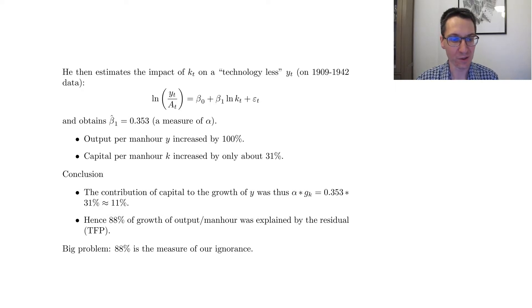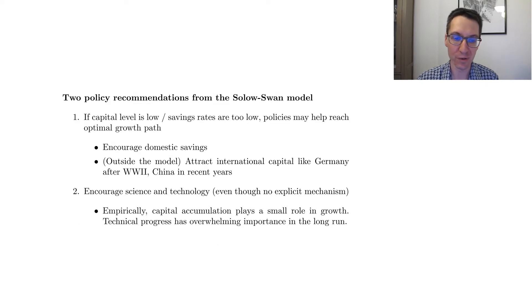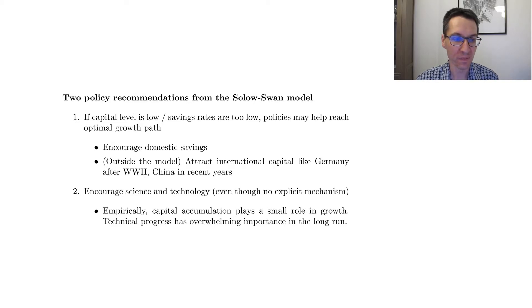All right, so this was Solow's exercise. Now, I'm just going to conclude this section on the Solow model with some policy recommendations we can gather from this work and from everything we've learned so far. So the first policy recommendation has to do with capital accumulation. So if capital level is low or savings rates are too low, then it may be a good idea to have policies to help reach an optimal balanced growth path by either encouraging domestic savings.